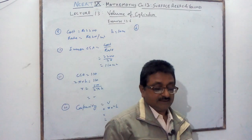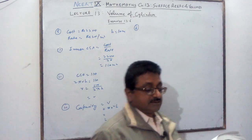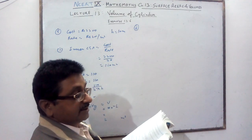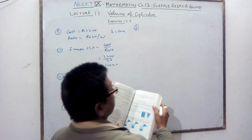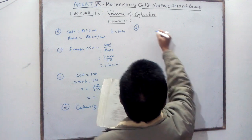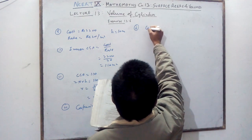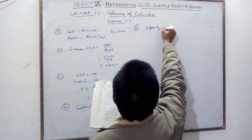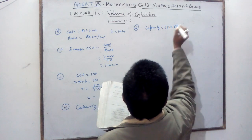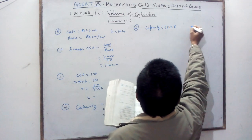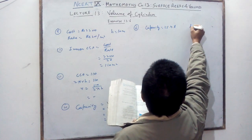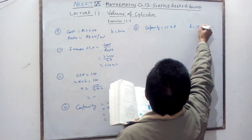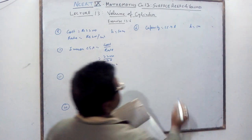Question Number 6: a closed cylindrical vessel is given with capacity 15.4 liters and depth or height of 1 meter. You need to find the radius and the total surface area.